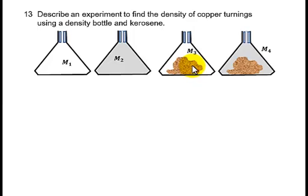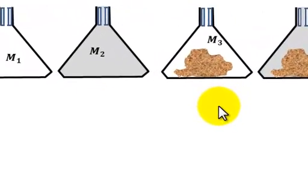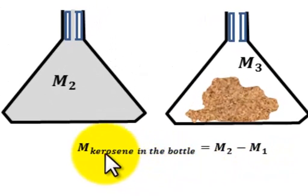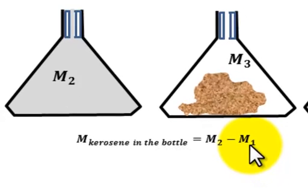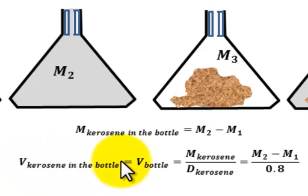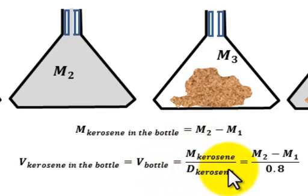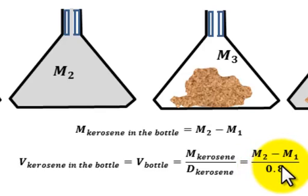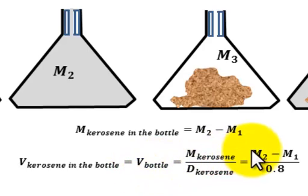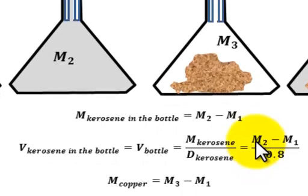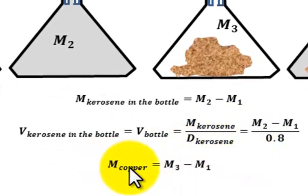In symbols, the steps are as follows. Step 1: the mass of kerosene in the density bottle is M2 minus M1. The volume of the kerosene in the bottle — which equals the volume of the density bottle itself — is equal to (M2 minus M1) divided by the density of kerosene, which is 0.8. Next, the mass of copper turnings in the density bottle is M3 minus M1.